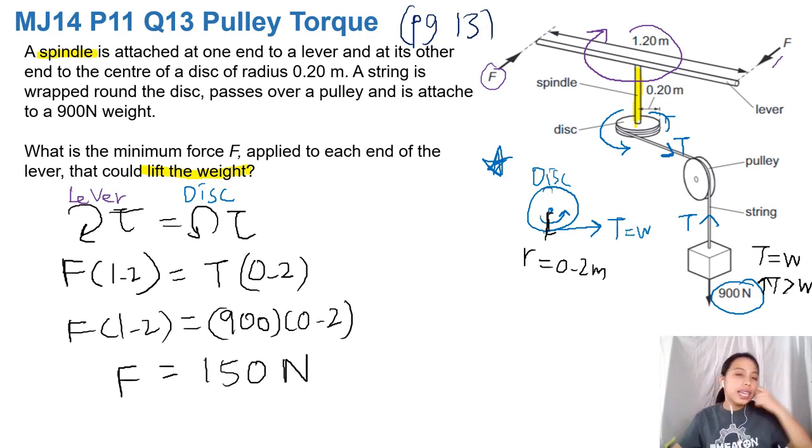So that is the minimum you need to apply to the lever to even lift it. If you apply less than that, it's not going to work. The block is going to just pull everything down.